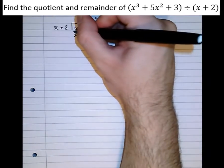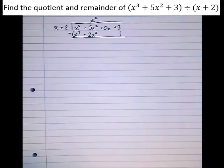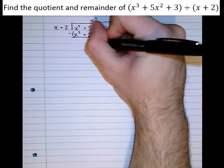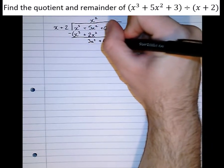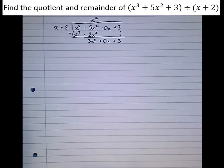And what we're going to do, we're going to subtract this line here from the line above. x cubed take x cubed is nothing. 5x squared take 2x squared is 3x squared plus 0x plus 3. And that's the first step done.